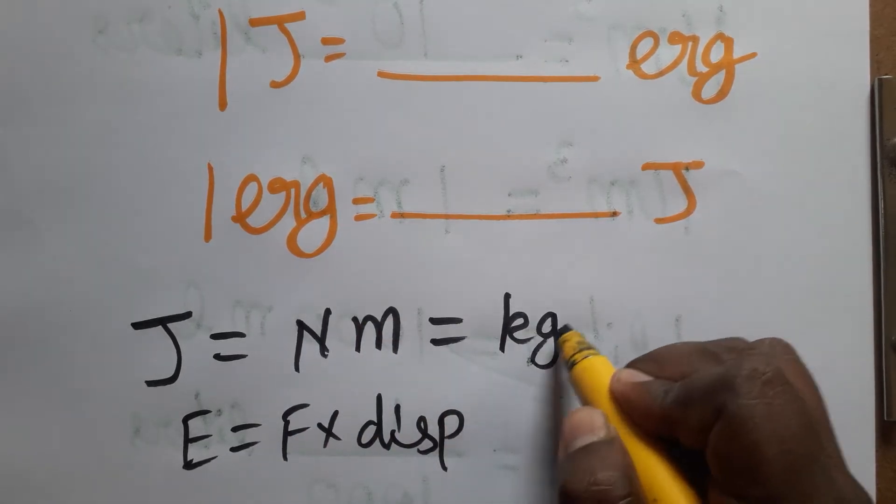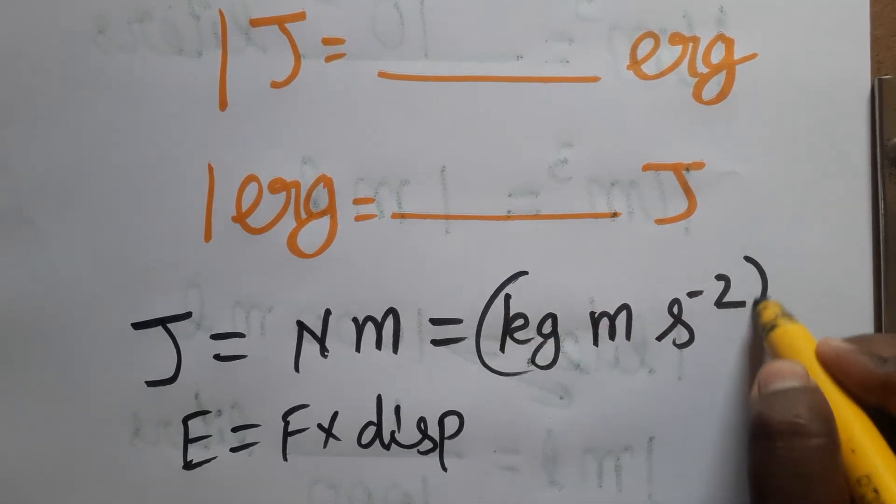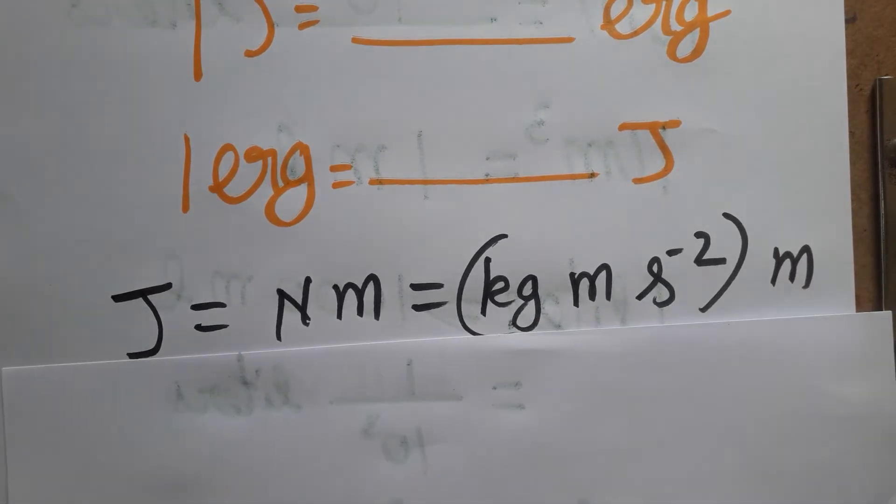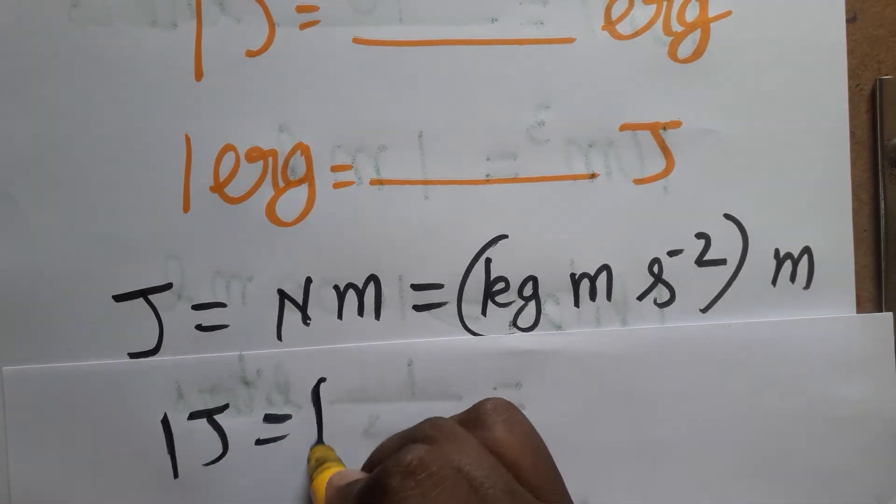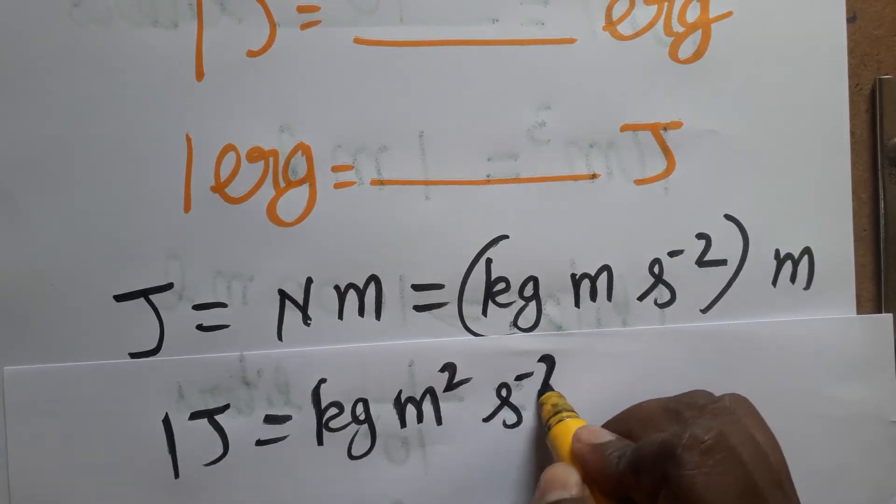Now we got 1 Joule is equal to kg meter square second minus 2. We got what is 1 Joule.